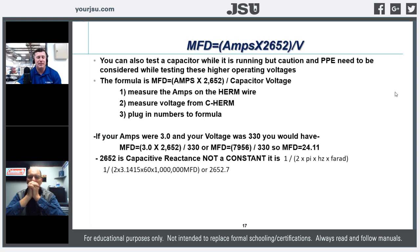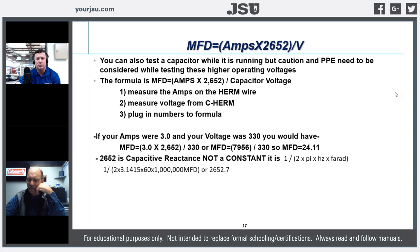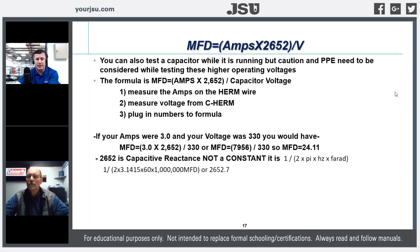One thing I found in the field is a capacitance load test — testing the capacitance rating of a capacitor while it's running. The formula is: microfarads equal amps times 2652, divided by the actual capacitor voltage. That 2652 factor is based on the 60-cycle rate in the United States. The 2652 number is different if you're working in countries that use 50 hertz.